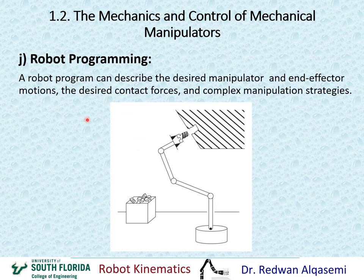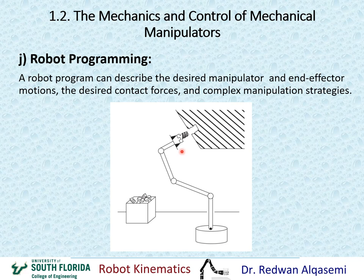Robot programming includes a description of the desired manipulator end effector motion, the desired contact forces, and some complex manipulation strategies. For example, picking a screw from a box, inserting it into a hole, and screwing it in requires a lot of complex programming involving trajectories, forces, and strategies to complete the full task using the robot.